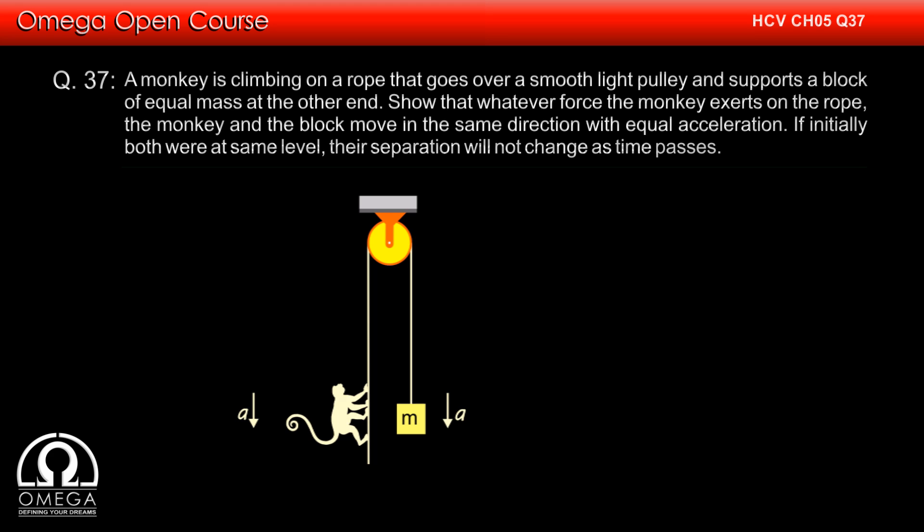Since the magnitude and direction of acceleration is same for the monkey and the block, they will always move together. If initially they were at the same level, they will always be at same level.